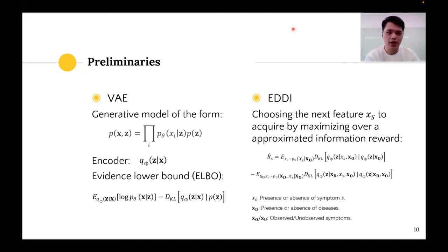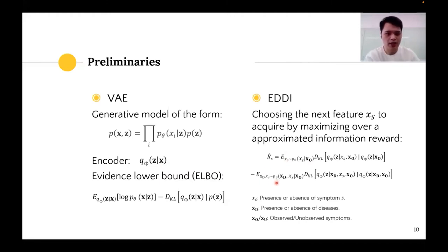ADI is a VAE-based framework. It chooses the next symptom X_S to acquire by maximizing an over-approximated information reward. Using VAE encoding distributions P_θ to sample the unknown symptom and disease presence X_S and X_D, the two expectations can be approximated by a Monte Carlo process.